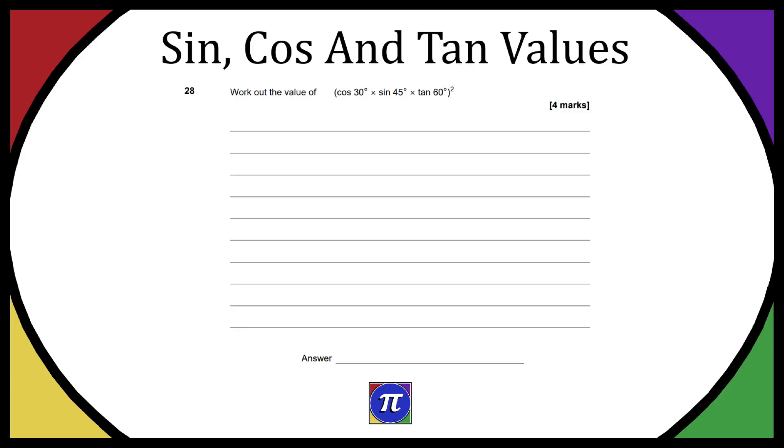Now we need to work out the value of cos of 30 times sine of 45 times tan of 60 all squared. And as the title says, this is really a sine, cos, and tan values question.